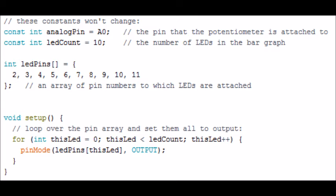So what we're saying after that, it says thisLed - so if thisLed is smaller than ledCount, thisLed plus plus. So basically what it's going to do is that end bit there, focus on the end bit, thisLed plus plus. What that's going to do is it's going to go over the pin array. It's going to loop over all them numbers: 2, 3, 4, 5, 6, 7, 8, 9, 10, 11. It's going to loop over them all.